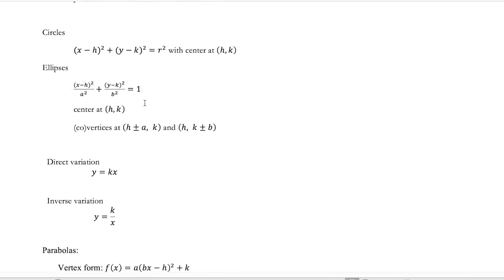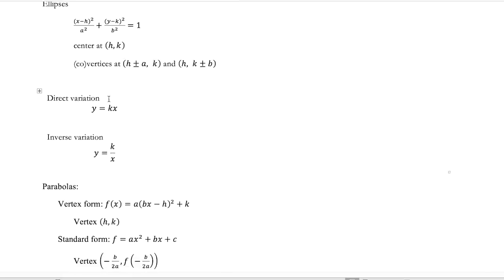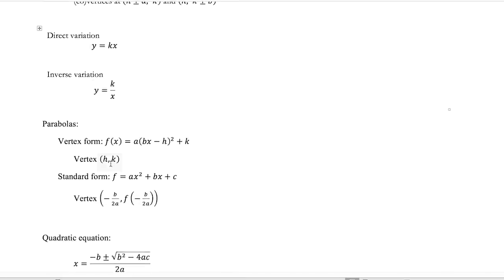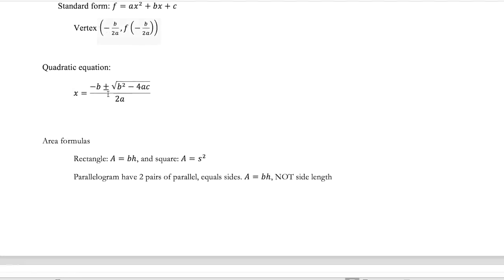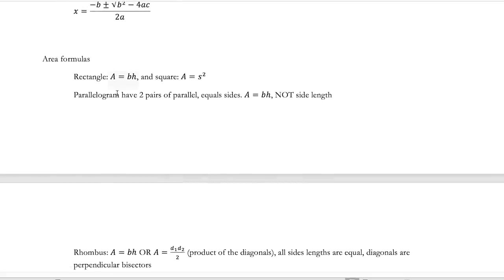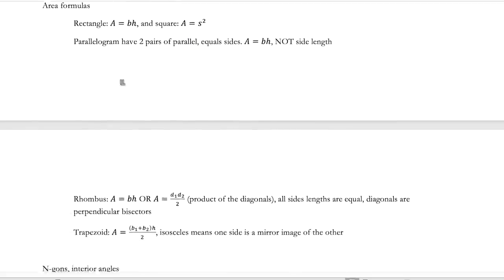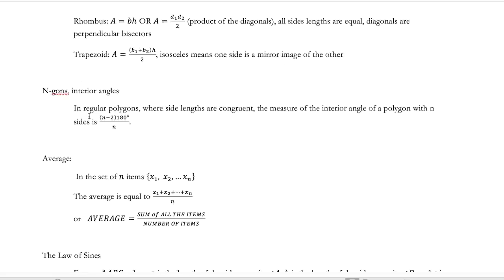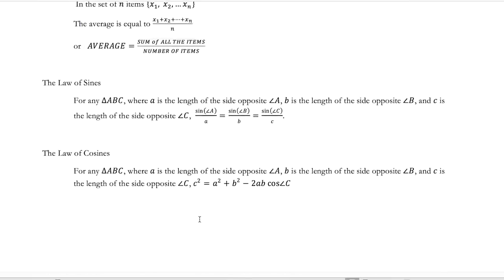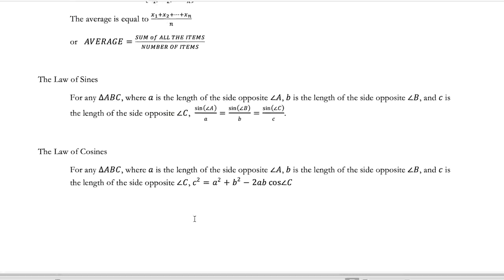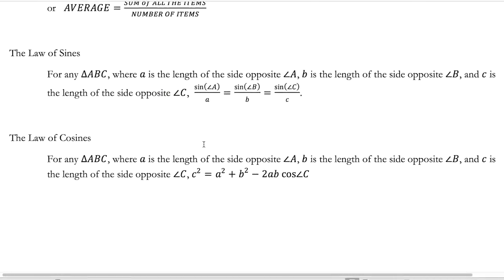Some other formulas you should know: circle formula, ellipse formula, direct variation and inverse variation, parabolas—standard form of a parabola, vertex form of a parabola, how to find the vertex in a parabola—the quadratic equation, area formulas for your rectangle, parallelogram, rhombus, trapezoid, n-gons, so whenever you have a regular polygon, how many diagonals does it have, what is the measure of the interior angle, that kind of stuff can always be really helpful. The average formula, another really important one, and the two that I've seen come up recently on the exam that are good for you guys to know are the law of sines and the law of cosines.